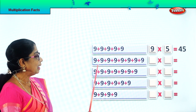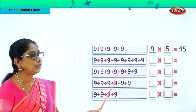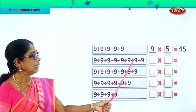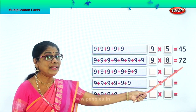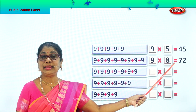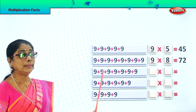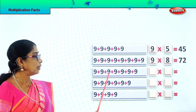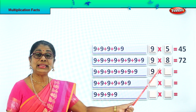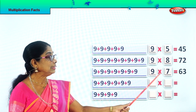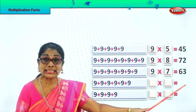That's our multiplication fact. And here, nine into what? 1, 2, 3, 4, 5, 6, 7, 8. Nine eight times. Nine eights are seventy-two. What is nine eight times? Next, this nine. How many times? 1, 2, 3, 4, 5, 6, 7. Nine seven times. Nine into seven. Nine sevens are sixty-three.